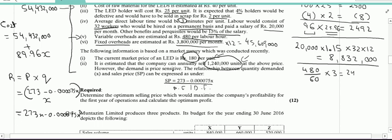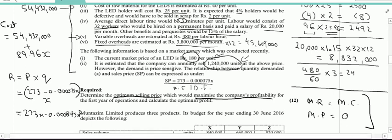So, the question says determine the optimum selling price. I have to calculate selling price which will maximize the company's profitability for the first year of operations and calculate the optimum profit. As discussed in previous videos, we can solve this question by two methods. Either marginal revenue is equal to marginal cost or marginal profit is equal to zero. Both of these conditions will give you same answer. Let us solve this by this first method.